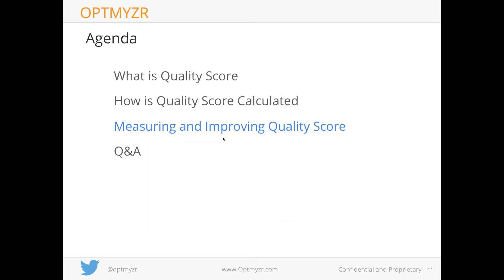Let's take a quick Q&A break. On the question of what numbers are good: a quality score of 1 is really bad, 10 is really good, and anything from 7 and above is good. Anything below that has room for optimization. Also, improving a keyword from a quality score of 1 has a bigger financial impact than improving one from a 4 — the lower the score, the higher the cost penalty from Google.